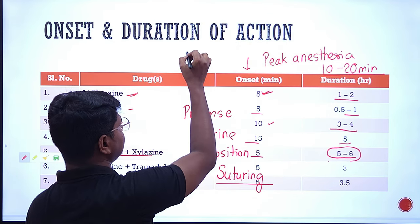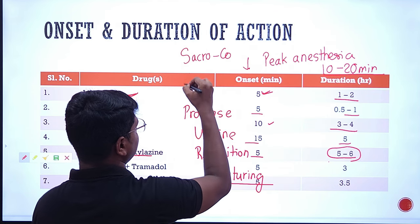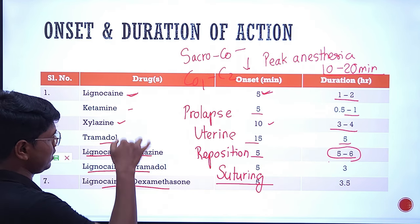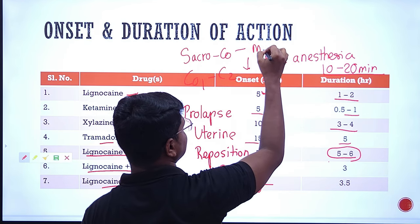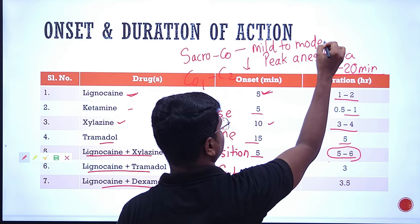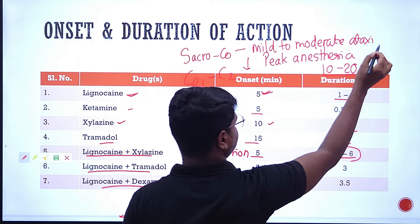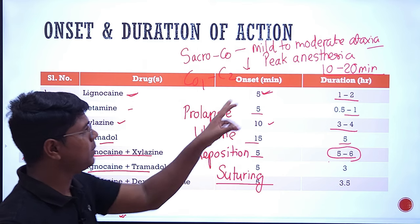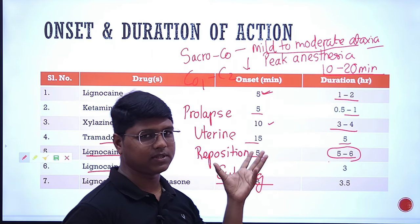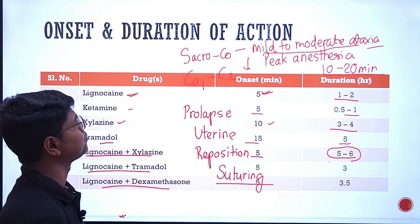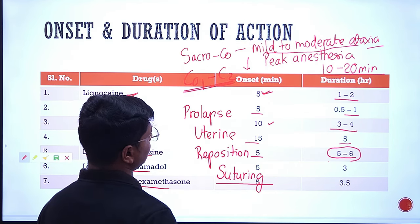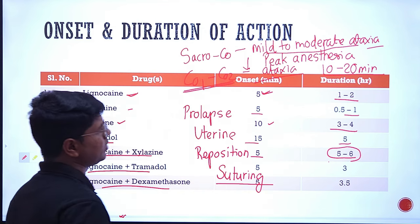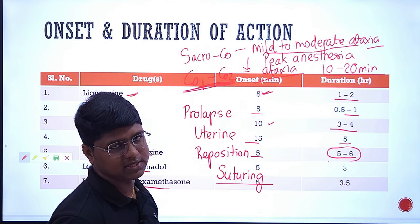If you are depositing in the sacrococcygeal space with any of these protocols — whether lignocaine with tramadol, lignocaine with dexamethasone, or any of these — you may find mild to moderate ataxia. The animal will not be lame; the hind limbs will be completely functioning, but you may find some mild to moderate ataxia. Don't fear this — if you are doing everything right, nothing will happen. If you are depositing between coccygeal 1 and coccygeal 2, the degree of ataxia is very much less than sacrococcygeal. Why? Because of cranial migration — if you deposit at sacrococcygeal it may go beyond mid sacrum, but at coccygeal 1 and 2 it may only go to mid sacrum — so the ataxia level varies.